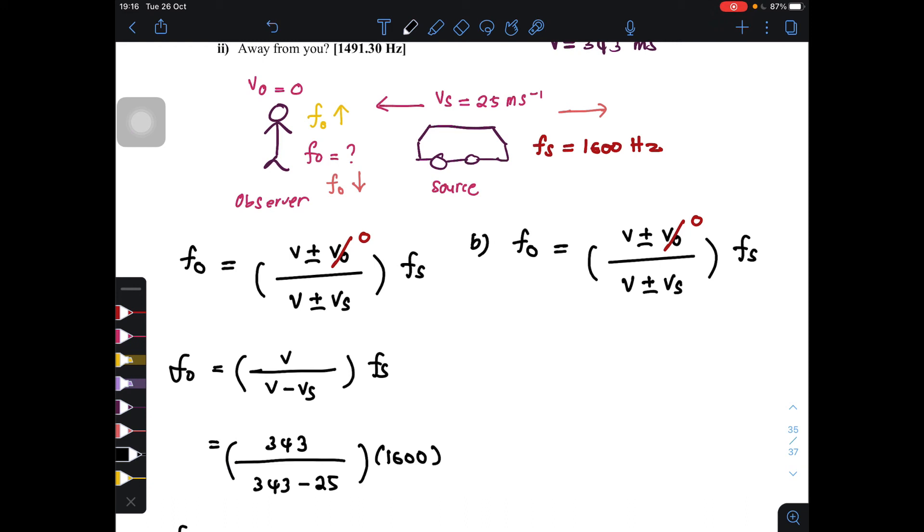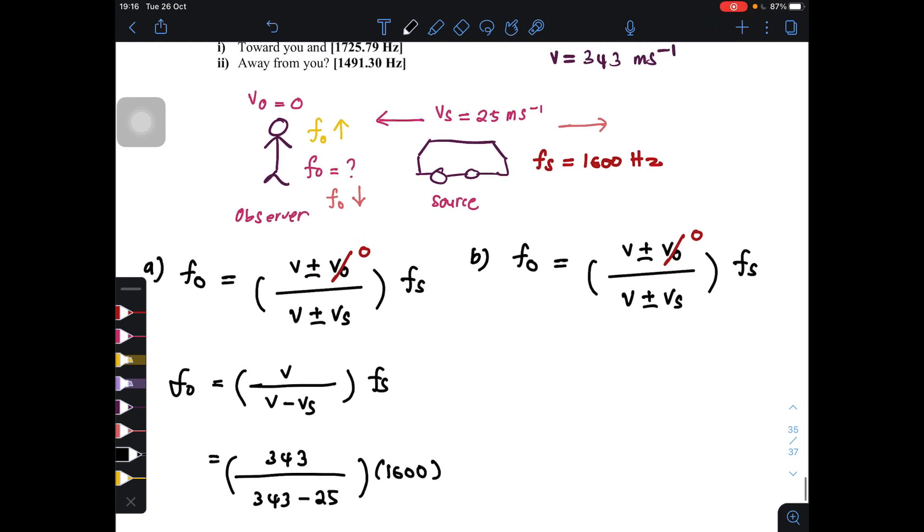So this one is for question B, this is for question A. So if we want this to decrease, this whole thing must increase. So in order to get the whole thing to increase, we need to add. So f_o is equal to V divided by V plus V_s times f_s.